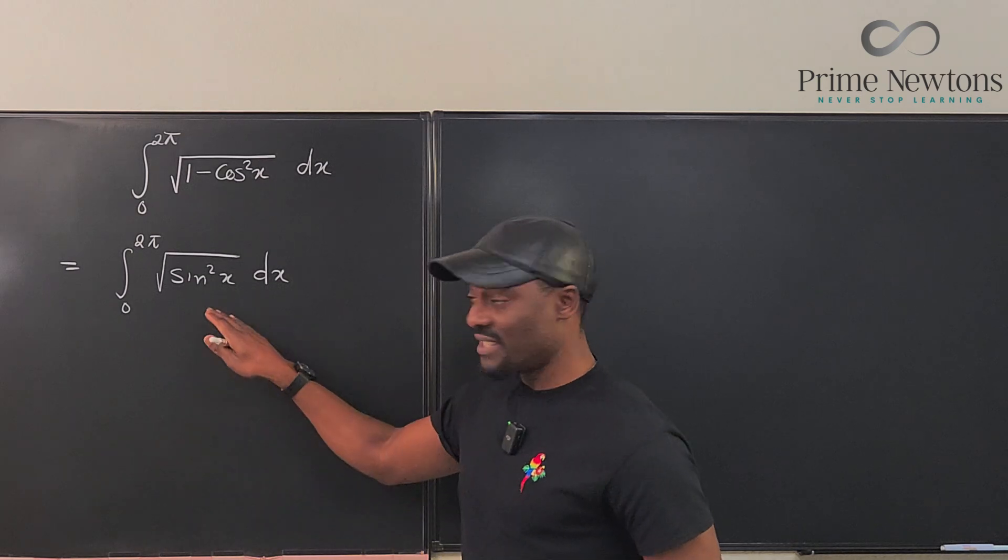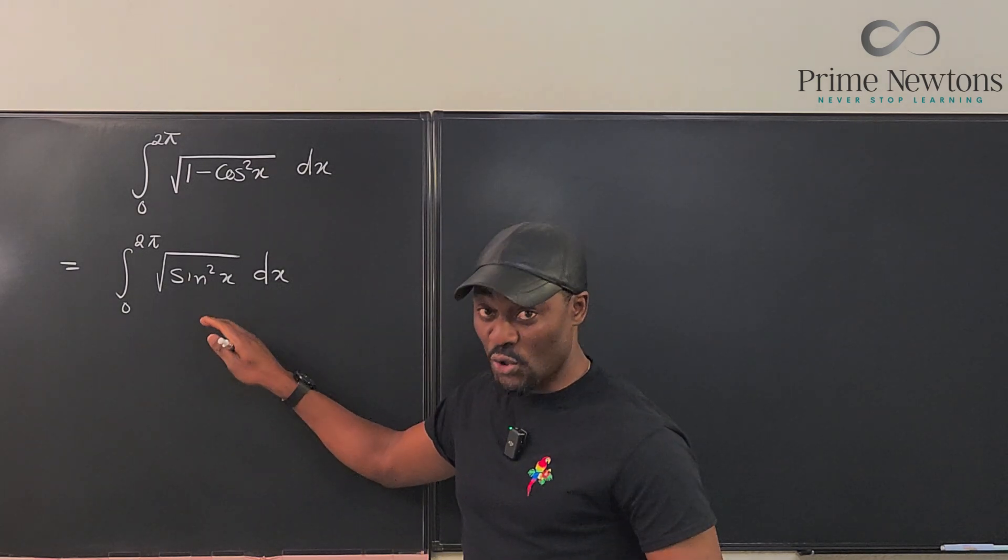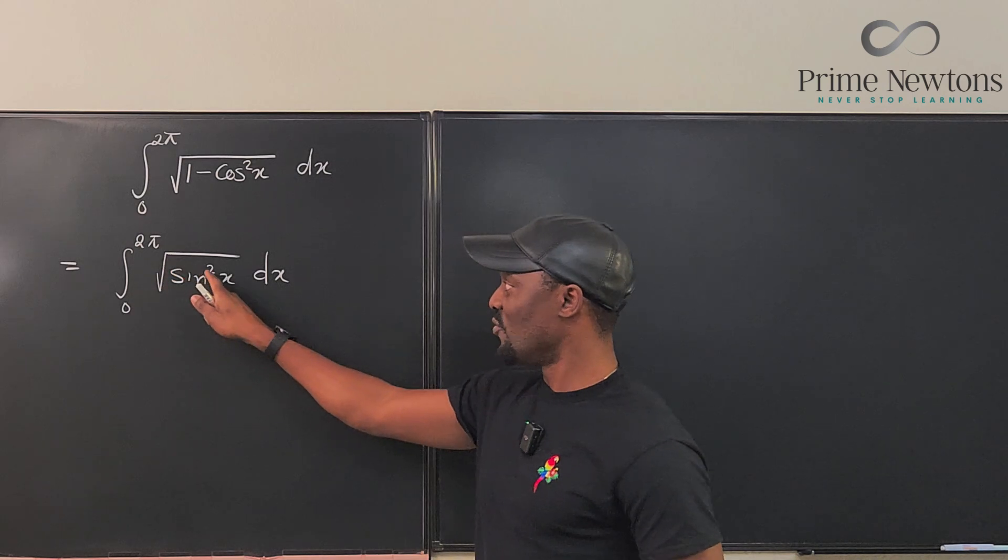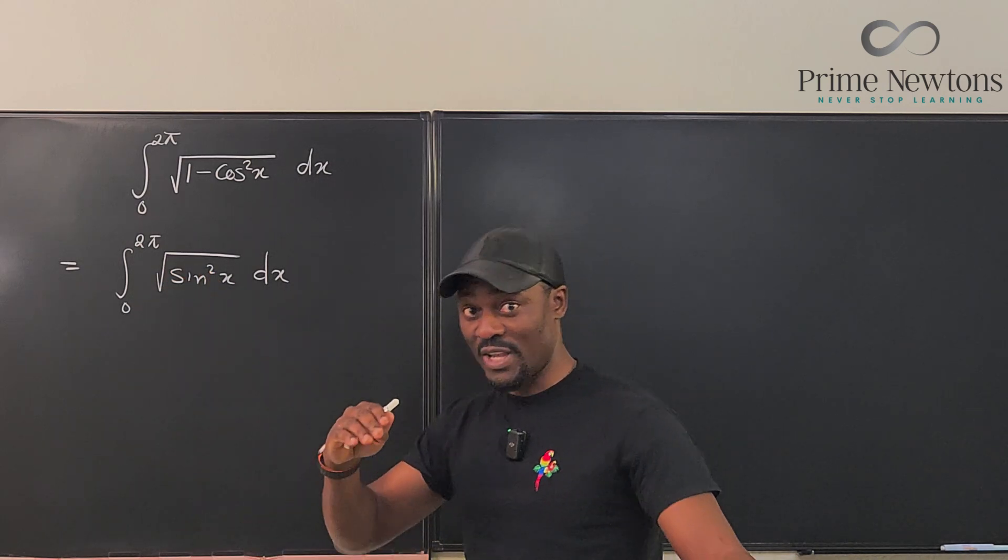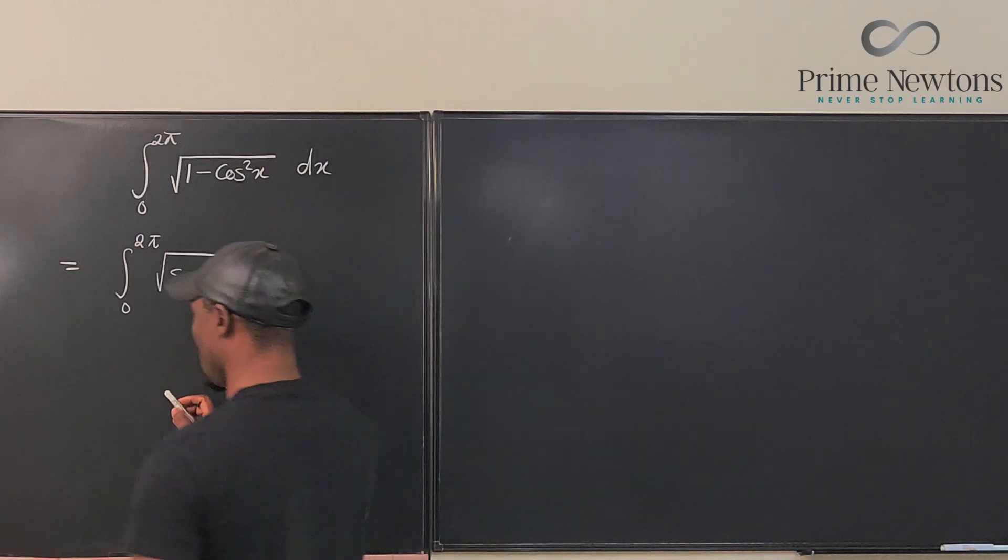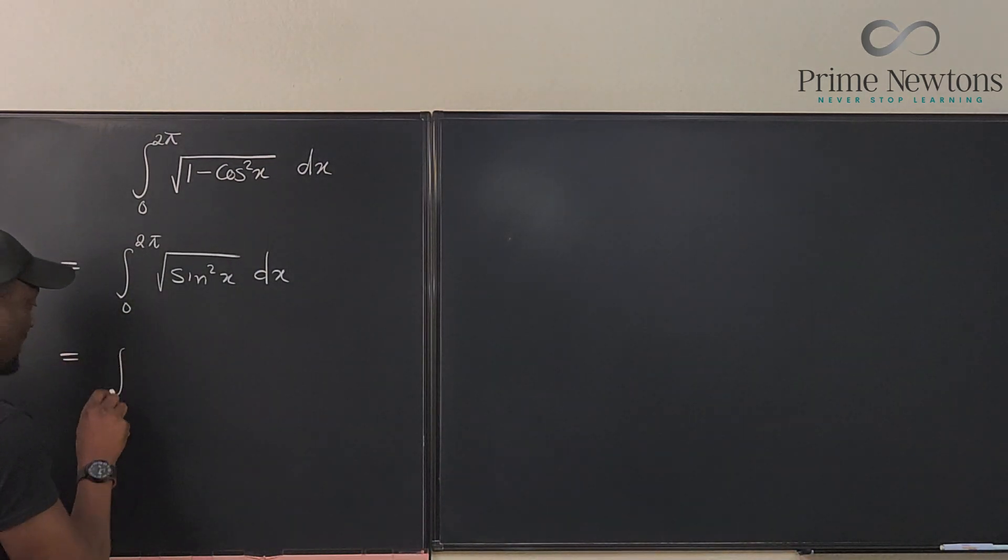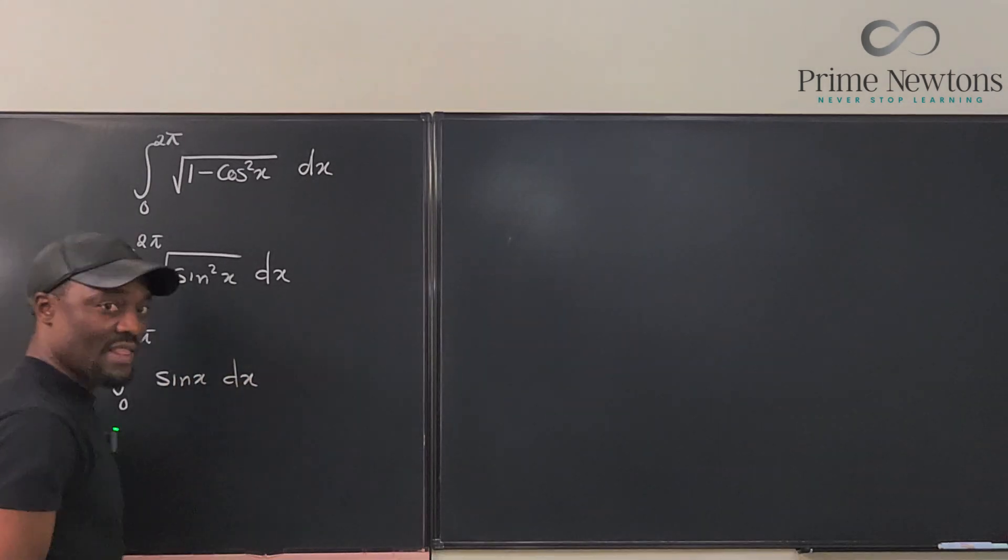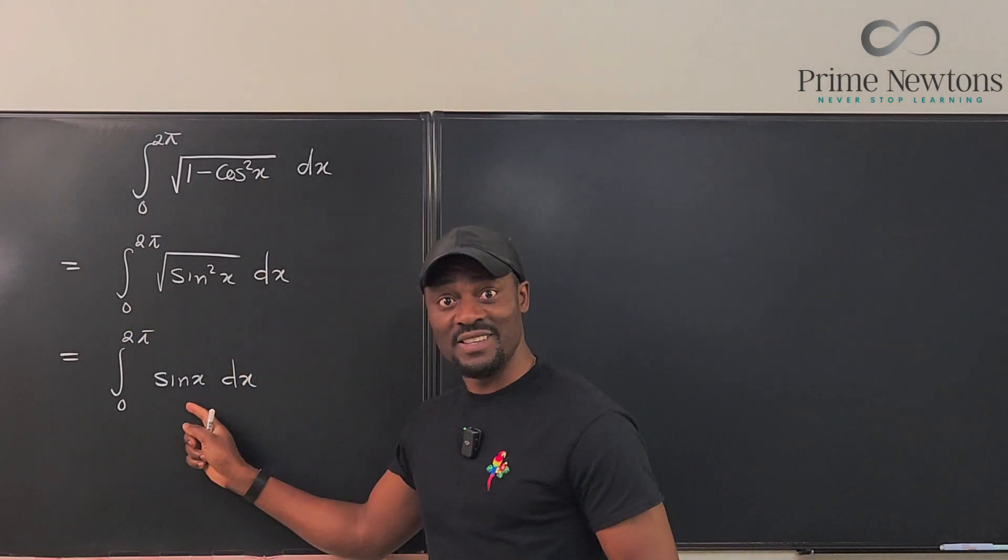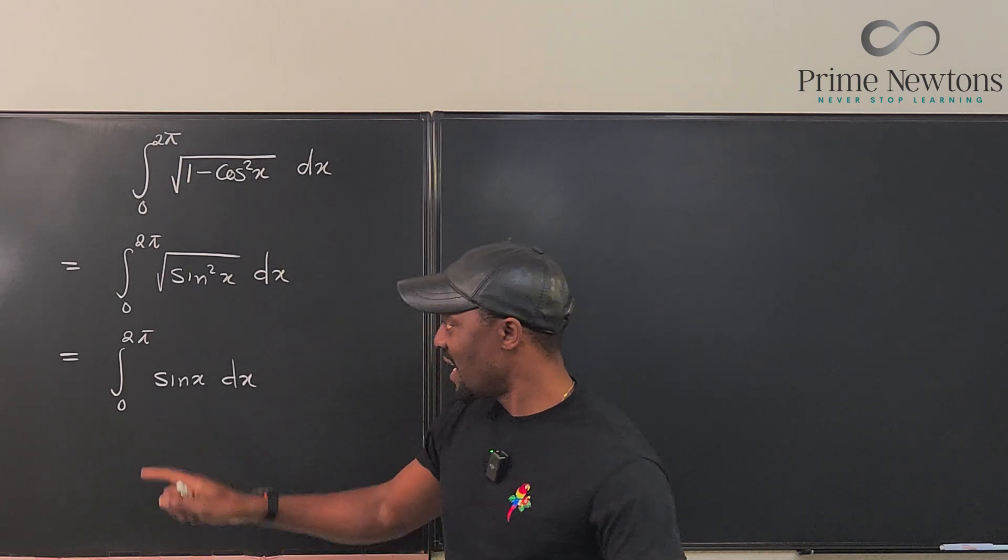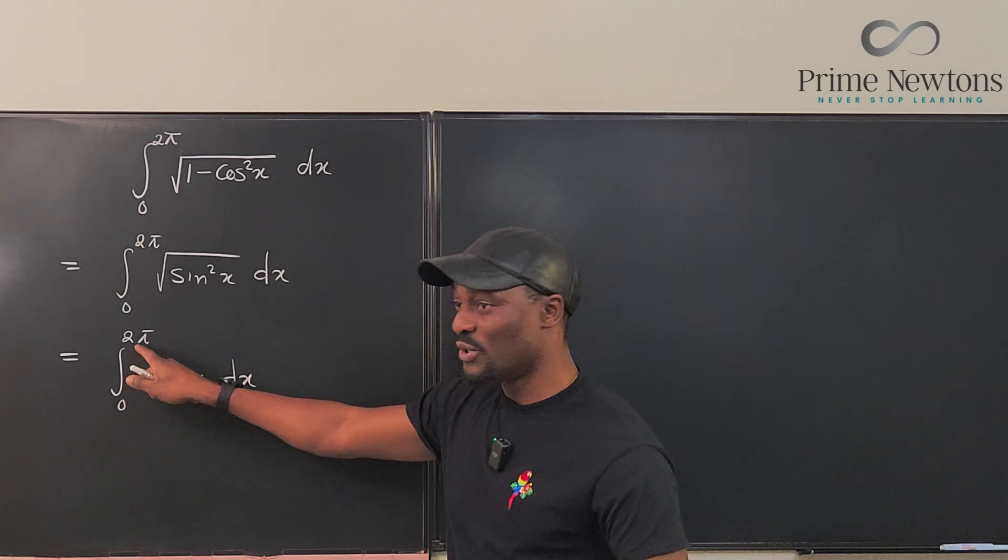And clearly this is correct. So who does not know that the square root removes the square. When you take the square root of a square, you just get the answer that's there. So we go and say this is the integral from zero to 2π of sine x dx. And then you can integrate sine x.